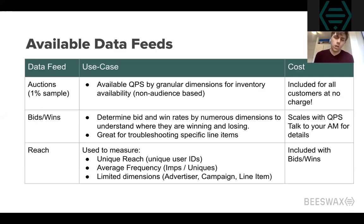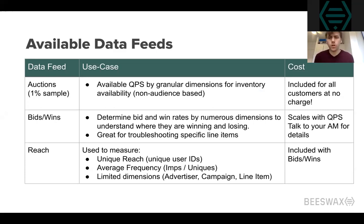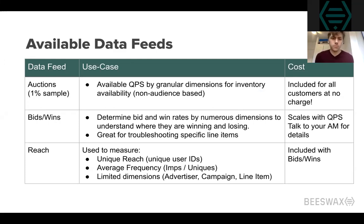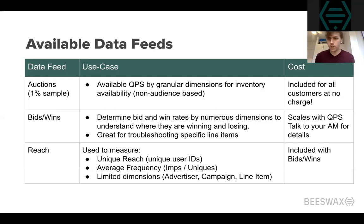Then we have two offerings which we call Advanced Metamarkets: the bids and wins report and also reach. Bids and wins is what it sounds like — there's bid and win data, but we also surface media spend as well. Some customers find this really useful for troubleshooting: they want to see what inventory they're bidding on, where they're losing more frequently than winning, week-over-week changes in winning patterns. This is an upsell and it scales with QPS, so if you're interested, talk to your account manager or sales rep on the Beeswax side.